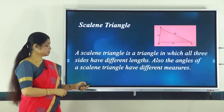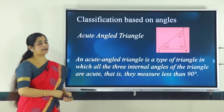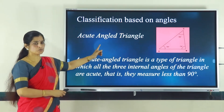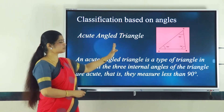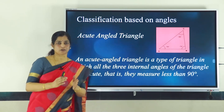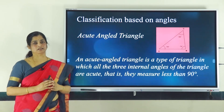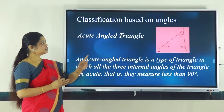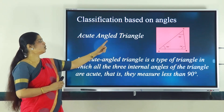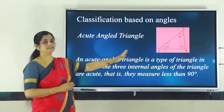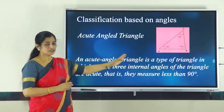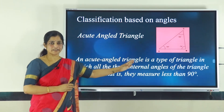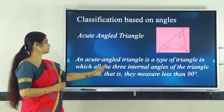Now let us look into the classification of triangles based on angles. The first one is the acute angle triangle. An acute angle is one which measures less than 90 degrees. In the figure, you can see clearly that all three angles are less than 90 degrees. Such a triangle, where all three angles are less than 90, is called an acute angle triangle.